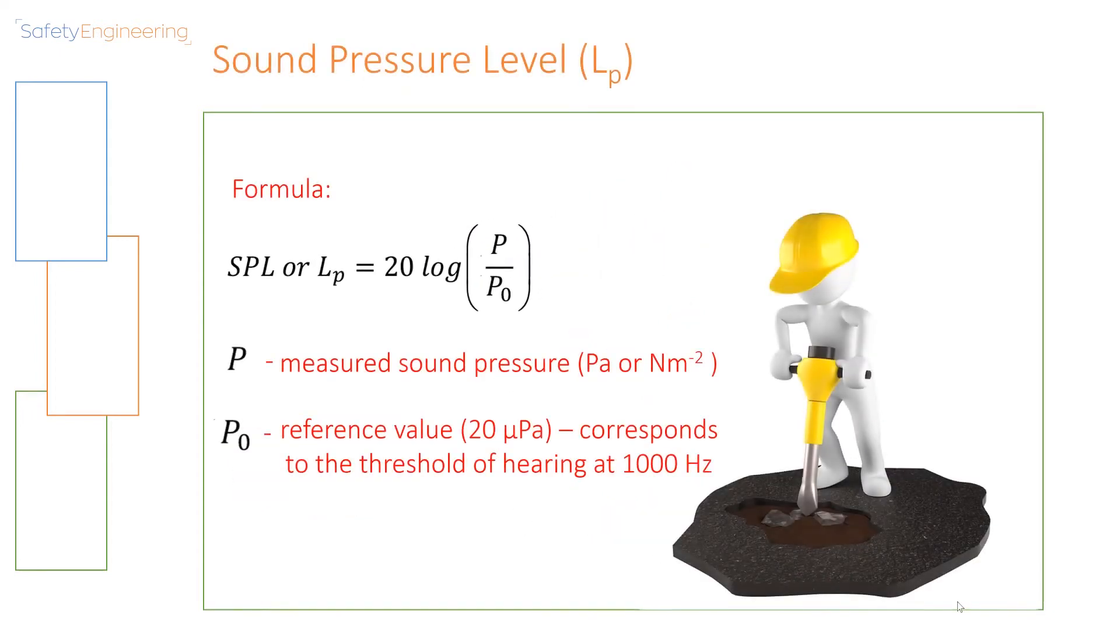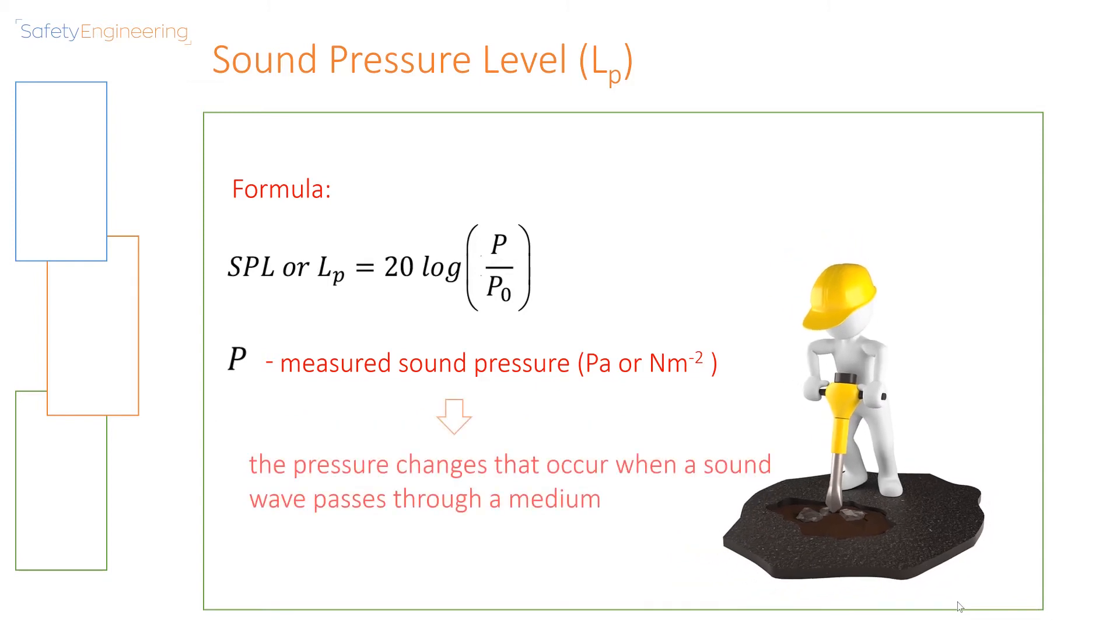Let us now break down the equation for sound pressure level. In this equation, P stands for the measured sound pressure in pascals or newtons per square meter. P naught is a reference value which is 20 micropascals. This corresponds to the threshold of hearing at 1000 hertz. Now, the sound pressure is the pressure changes that occur when a sound wave passes through a medium.